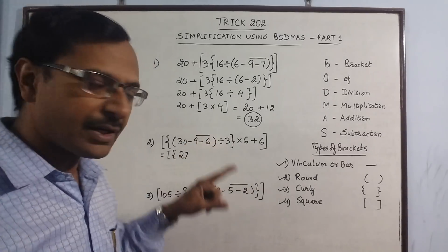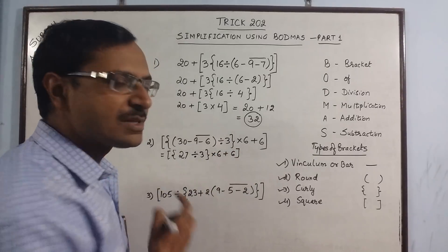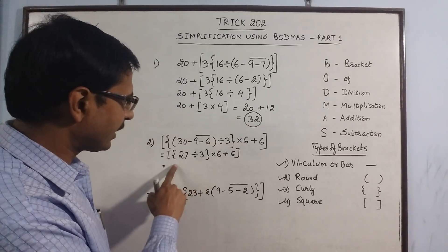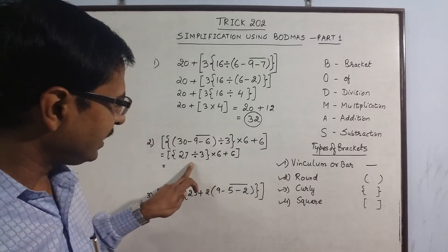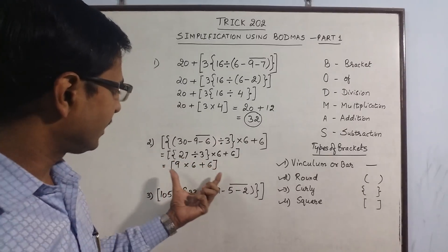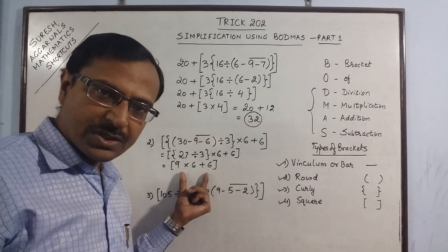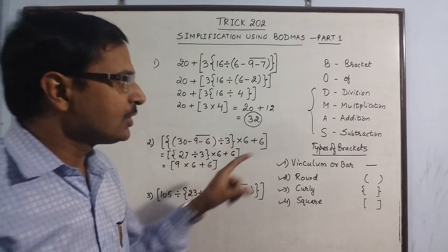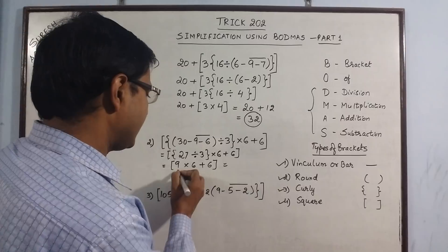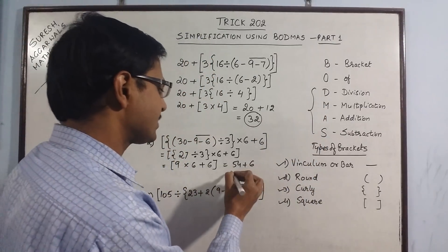Since I have got rid of vinculum and round brackets, now I look for curly brackets. In the curly bracket we have 27 divided by 3, which is 9. Only the square bracket remains: 9 into 6 plus 6. Here the priority of operations applies — multiplication comes before addition. So 9 times 6 is 54, and 54 plus 6 gives a final answer of 60.